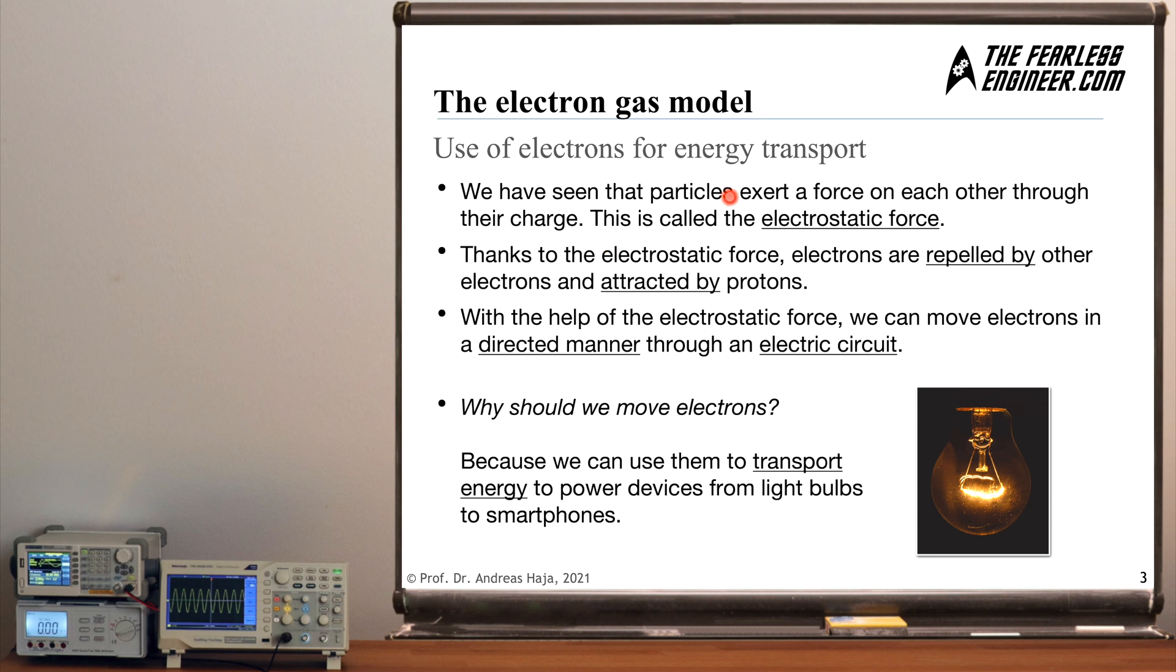We have already seen that particles such as protons and electrons exert a force on each other depending on their electric charge. And the force which they exert on each other is called electrostatic force. And thanks to this force electrons are repelled by other electrons, protons are repelled by other protons. So if the sign of the charge is identical, positive and positive, negative and negative, they repel each other. And if the sign differs, for example if you have an electron and a proton, then you will find that this electrostatic force leads to an attraction between both particles.